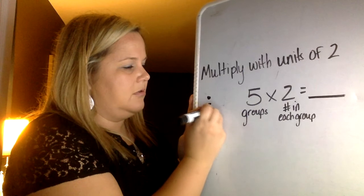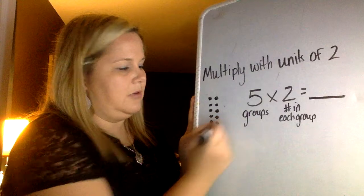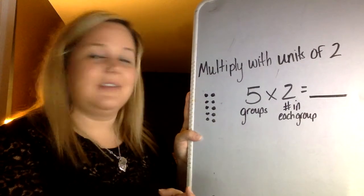So 1 group, 2, 3, 4, 5, and then there would be 2 in each group. That is what my array would look like for 5 times 2.